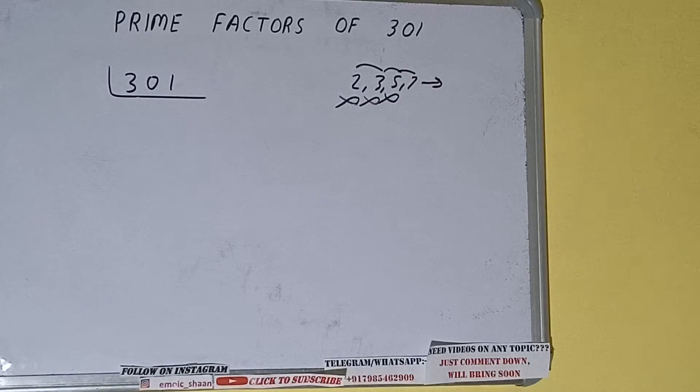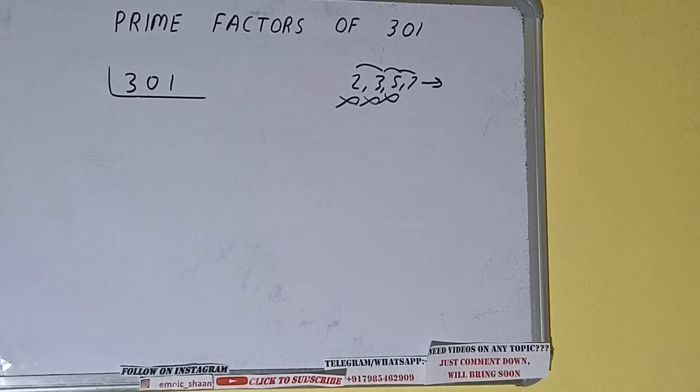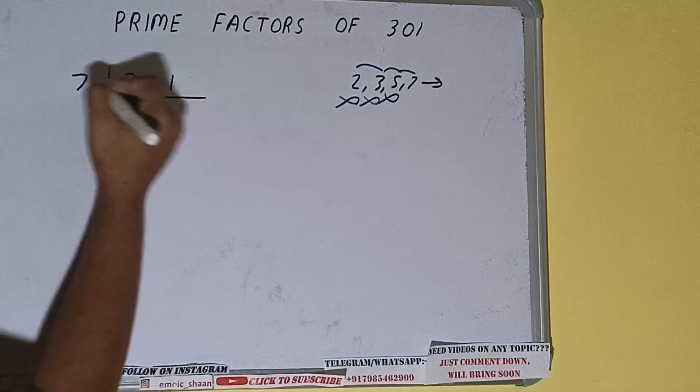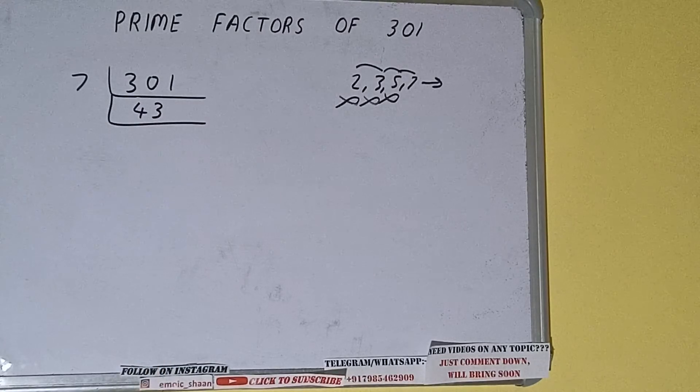7 times 4 is 28, 2, 1 with 7. It is divisible. 7 times 4 is 28, 2, 1, 7. 3 times 21, we'll be having 43. And 43 is further not divisible by 7, because 43 is also a prime number.